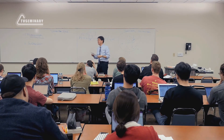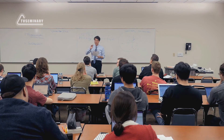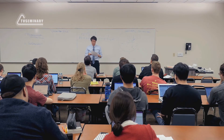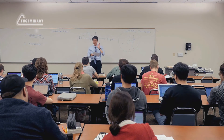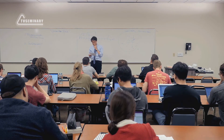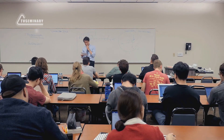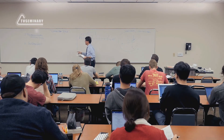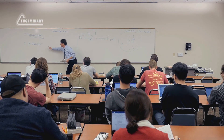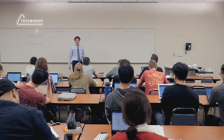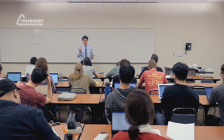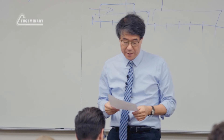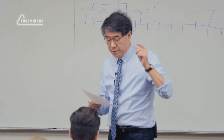Давайте пойдём дальше, перейдём к следующему, потом сделаем перерыв, и после перерыва я разделю вас на малые группы, и мы поговорим о наших церквях. Итак, в бюрократической среде — это второе учреждение — в качестве примера я использую современный банк.